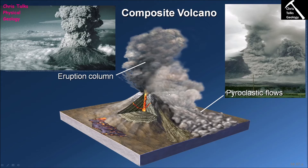The pyroclastic flow is made of the same material as the eruption column — a mixture of dust, ash, and superheated gas — and it moves down the sides of the volcano very quickly, anywhere between tens of miles an hour up to hundreds of miles an hour. Pyroclastic flows are extremely dangerous. As the pyroclastic flow rolls over an area it leaves behind a layer of pyroclastic material, which we can identify as part of the pyroclastic rock sequence associated with composite volcano eruptions.